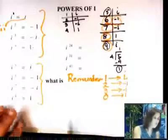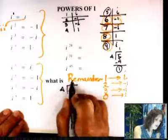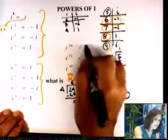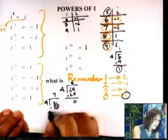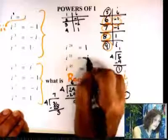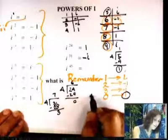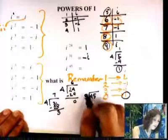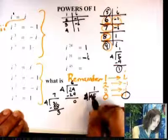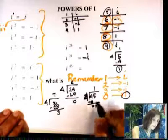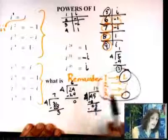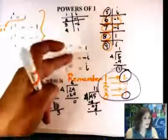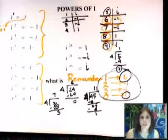Let's look at examples. i²⁴: divide 24 by 4 — no remainder, so i²⁴ = 1. i³¹: 4 times 7 is 28, remainder 3, so i³¹ = -i. i⁴⁵: 4 goes into 45 eleven times (44), remainder 1, so i⁴⁵ = i. Just make a little table and look at your remainders.